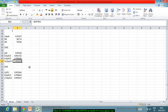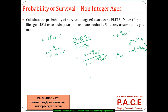Depending on which assumption we use, we get a small difference in the result. Under the constant force method, 0.5 p 45.5 is simply e to the power of minus (t − s) × mu. We first compute mu as minus log(1 − q), then use it to compute the survival probability. This is the complete approach for computing survival probabilities when non-integer ages are involved.